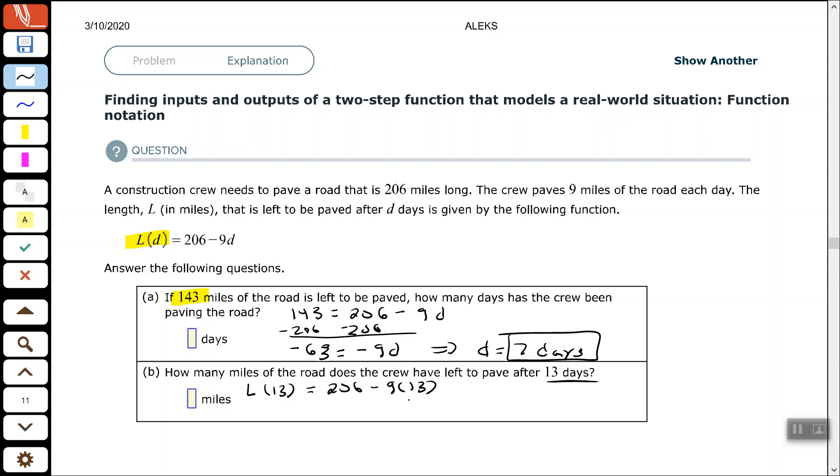So we're looking for L(13) equals 206 minus 9 times 13, replacing D with 13. We're inputting 13 into this function to see what we get out. So we know that 9 times 13 is 117.